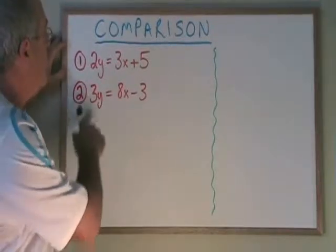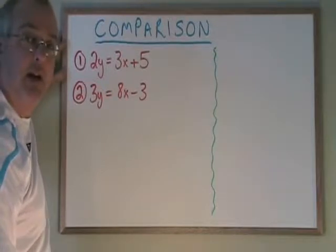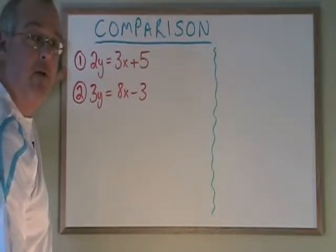In this example, I have 2y equals 3x plus 5 and 3y equals 8x minus 3, and I want to know the point of intersection.